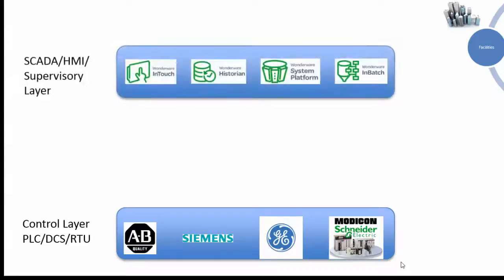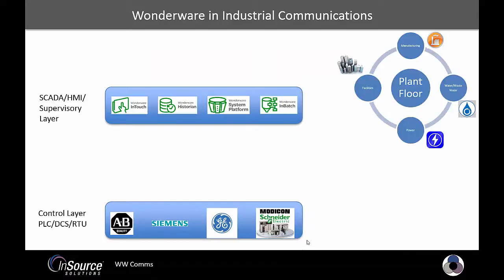Most automation systems typically employ a layer of software applications that provides real-time HMI, Historian, and other data management functions. These include technologies like the InTouch HMI, the Wonderware Historian, and our next generation technologies called System Platform.